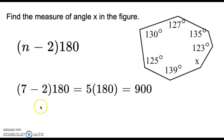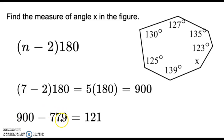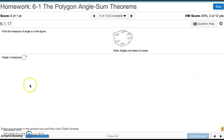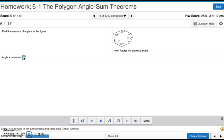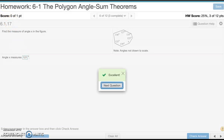Now we add up all of the given angles and subtract from 900 to get the missing one. Adding them all up gives 779. Subtracting from 900 gives 121 for x. Typing in 121 — that's the answer for number six.